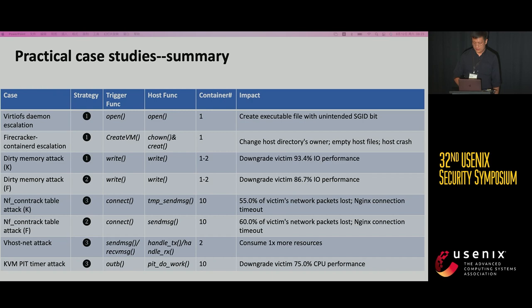Let's discuss more real cases with different strategies as shown in this table. For the Kata container, besides the VirtioFS daemon privilege escalation we discussed, we also launch a dirty memory attack, NF conntrack table attack, and vhost-net attack. For the Firecracker-based container, we launch a privilege escalation named Firecracker container d-escalation, a dirty memory attack, NF conntrack table attack, and the KVM PIT timer attack.